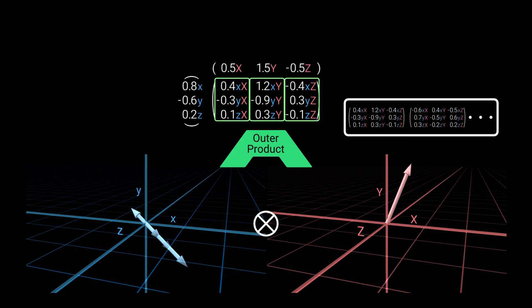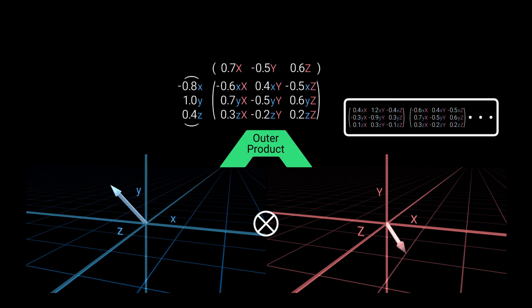So, all columns are scaled versions of the blue vector, and they are all aligned with it. Also, all the rows are scaled versions of the red vector, and they are all aligned with it. This property holds for any matrix obtained from an outer product.